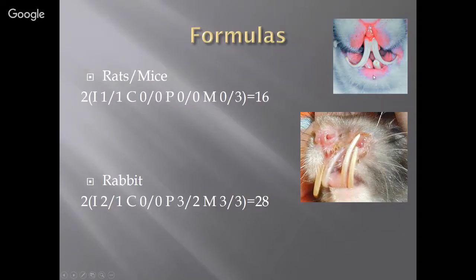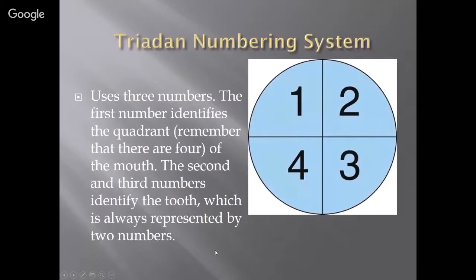Here are pictures of severe malocclusions — the incisors of animals whose teeth are constantly growing. If these teeth don't come into normal contact with lower teeth or the animal isn't given the opportunity to chew on things, they will grow all the way back into the jaw or into the skin. It's really important to monitor this and trim them if necessary.